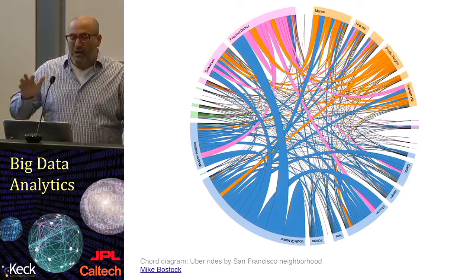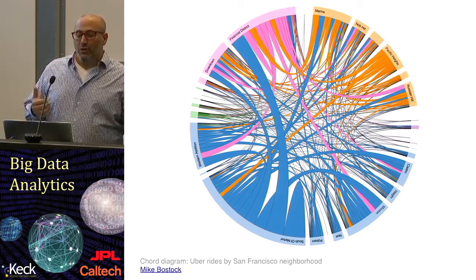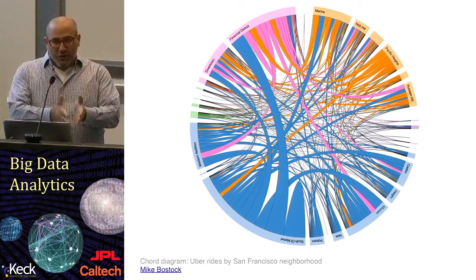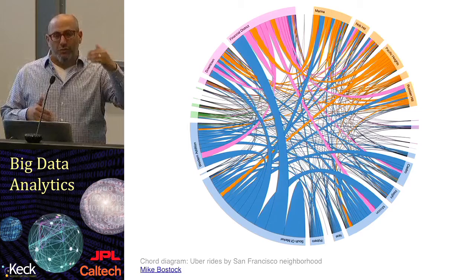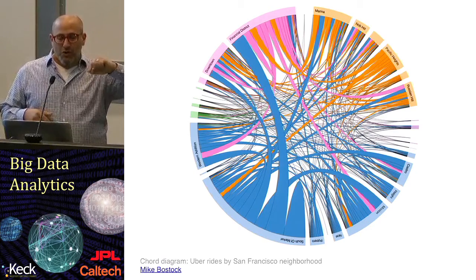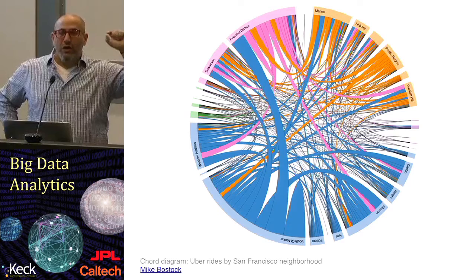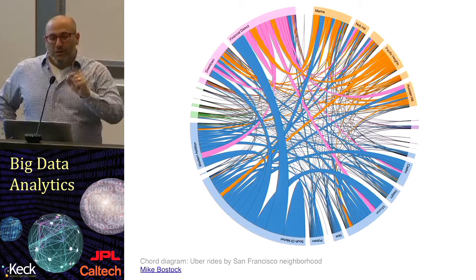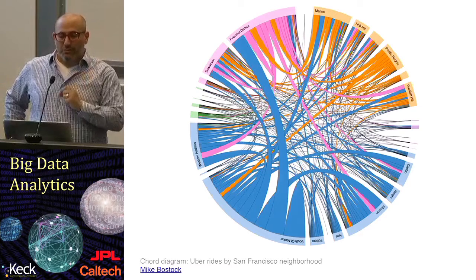Another way that networks are often shown is something called a chord diagram. This chord diagram allows you to show relationships and magnitude. It works by mousing over one of the particular edges shown on the outside. The relationships are shown by arcs connecting each of the nodes, and the width of the arc is proportional to the magnitude — the weight of the connection. So this diagram shows hierarchy and magnitude at the same time.